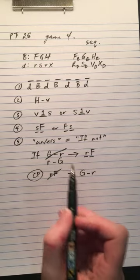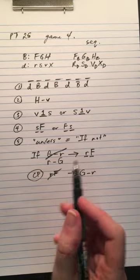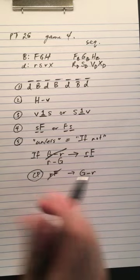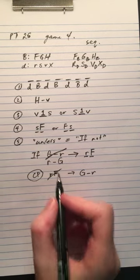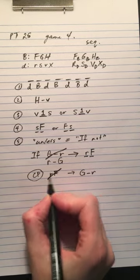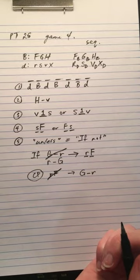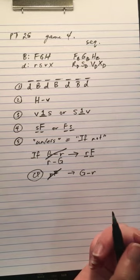So these are just equivalent ways of saying the same thing. If it's not the case that G is earlier than R, then F must be played immediately after R. And then the contrapositive is if F isn't immediately after R, then G has to be before R.